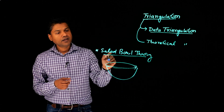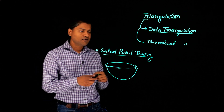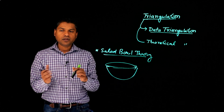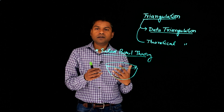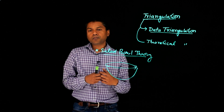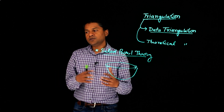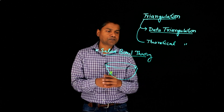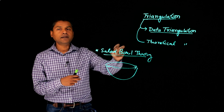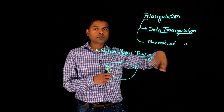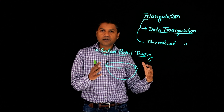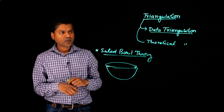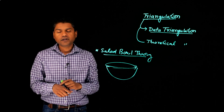I can use the salad bowl theory — not as the only theory, but as an example — to understand how international students, when they migrate to the U.S., integrate themselves in society here, what practices they adopt, what practices they bring from their own culture, and how they blend them. This theory can help me understand my interview data or other data sources from a different perspective, from a different lens, and that will deepen my understanding of the data. This is called theoretical triangulation.